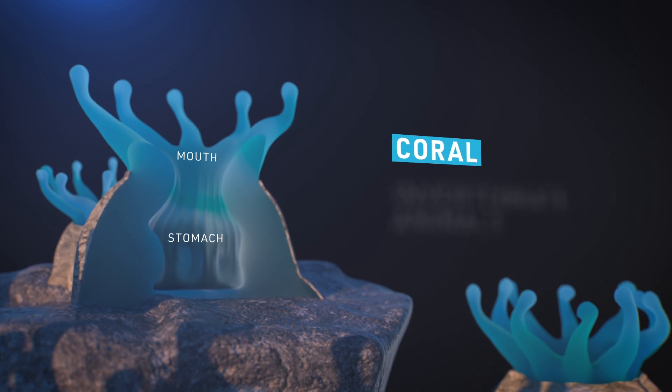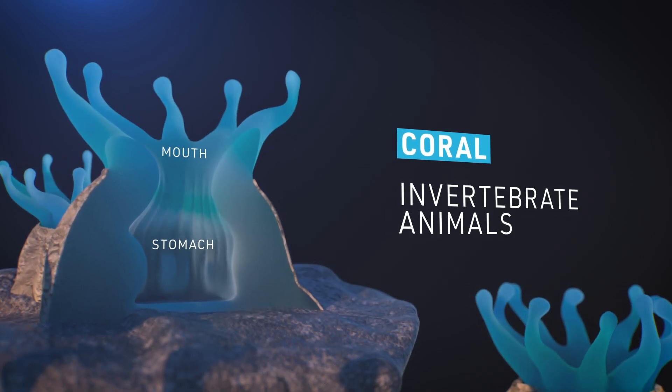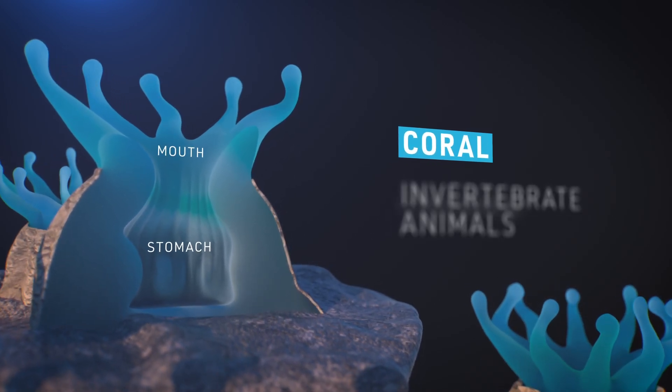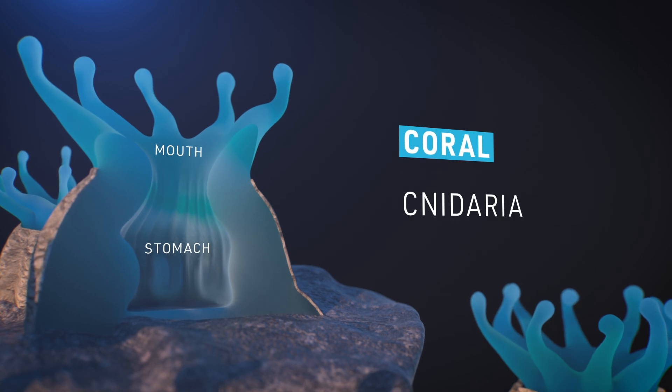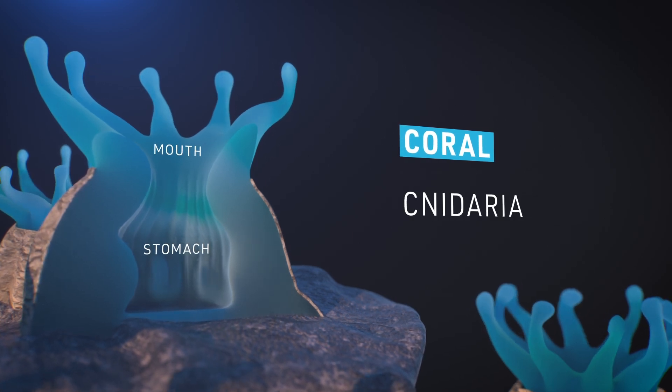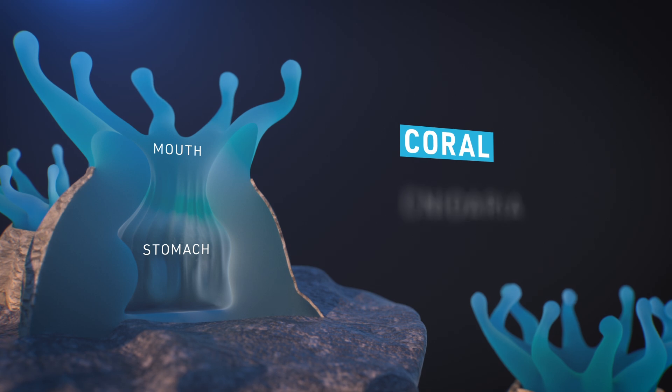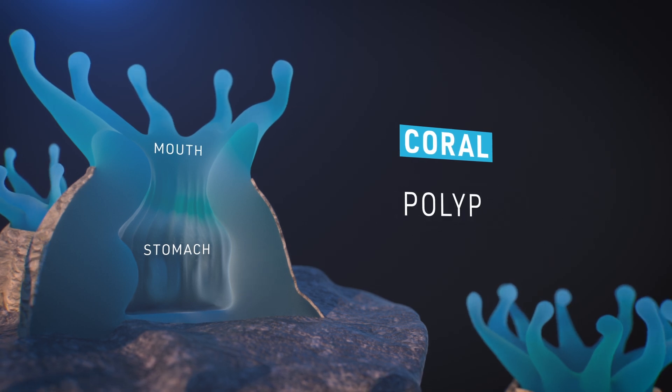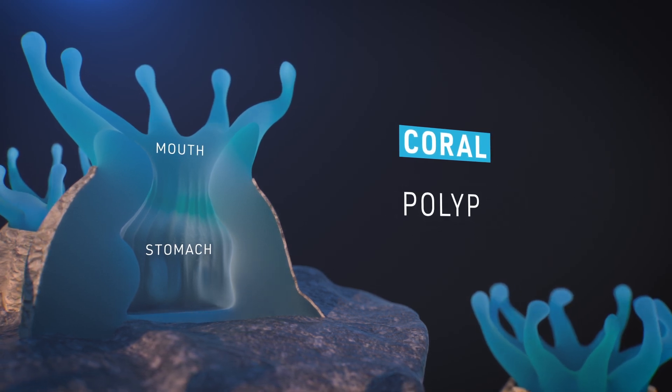Corals are not plants, but actually tiny invertebrate animals. They belong to a group of animals called cnidaria, similar to jellyfish and sea anemones. Each individual coral animal is called a polyp, which come together to form colonies.